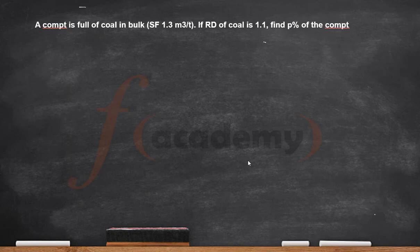As usual for practice, let's try to solve the problem that is on screen. It reads: A compartment is full of coal in bulk where the storage factor is 1.3 meter cube per ton. If the relative density of coal is 1.1, find the permeability percentage of the compartment.